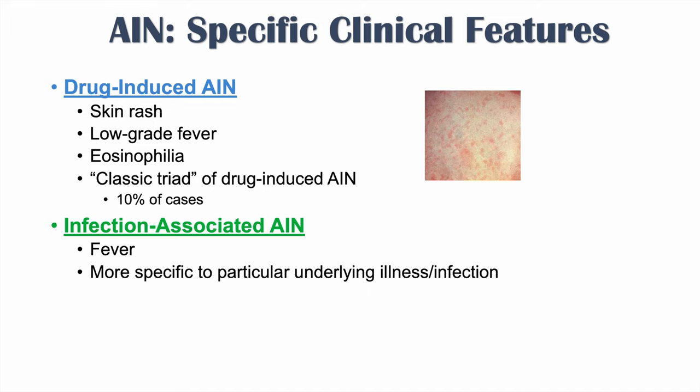Treatment involves identifying and removing the offending agent: stopping the causative medication, treating an underlying infection, or managing the systemic condition. Corticosteroids are also very important, especially with early initiation in the early stages of AIN, as this appears key to reducing morbidity.